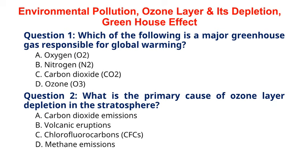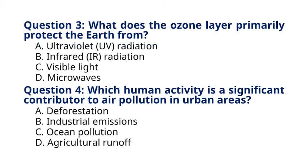Question 3. What does the ozone layer primarily protect the Earth from? A. Ultraviolet, UV, radiation. B. Infrared, IR, radiation. C. Visible light. D. Microwaves. The correct answer to question 3 is option A. Ultraviolet, UV, radiation. Explanation: the ozone layer absorbs and filters out most of the sun's harmful ultraviolet, UV, radiation, protecting life on Earth from its harmful effects such as skin cancer and cataracts.